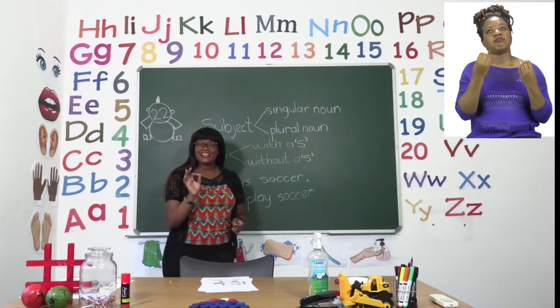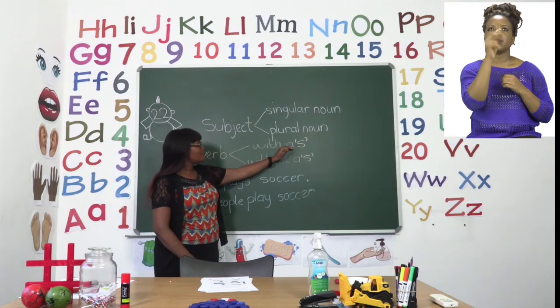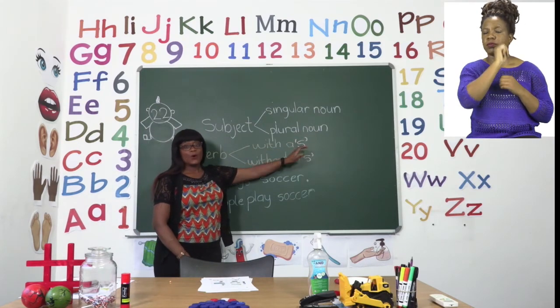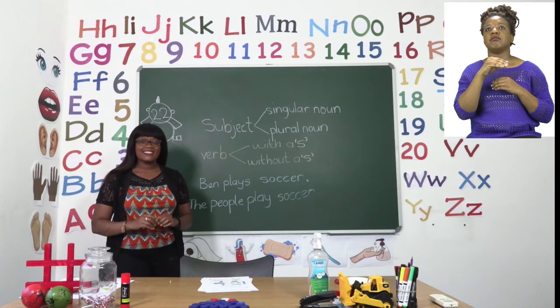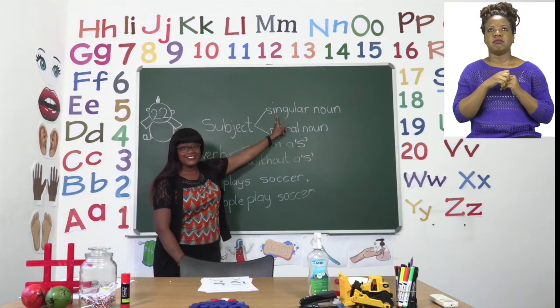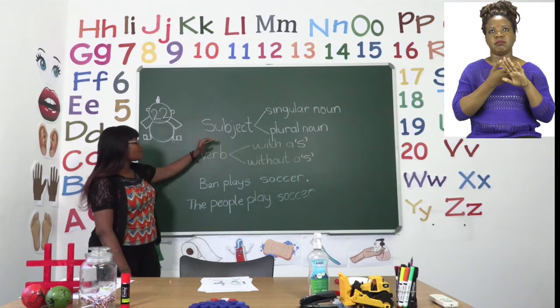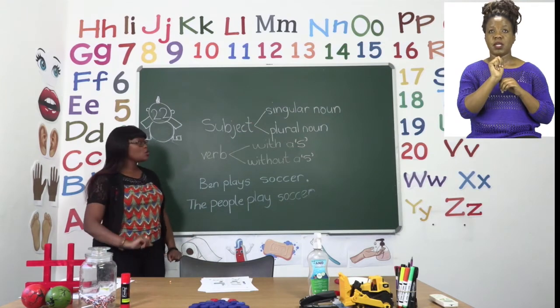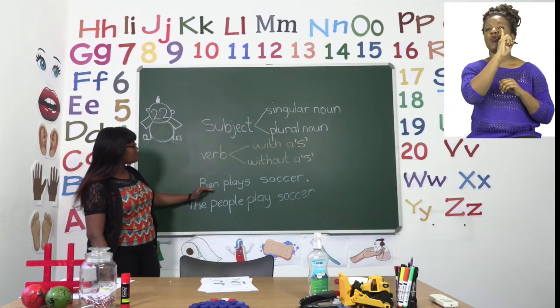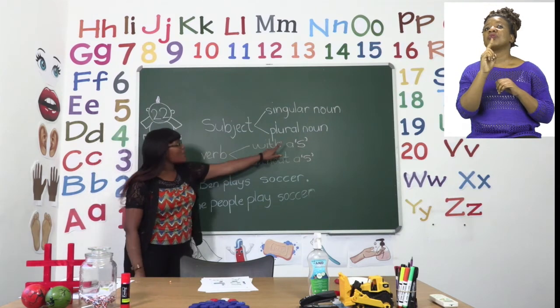When we have a singular noun the verb needs to have an S. Whatever verb it is needs to have an S at the end to agree with the singular noun. For example, Ben is our subject singular noun because he is only one person. So in order to agree with the word Ben, the word play needs to have an S. So we say Ben plays soccer.